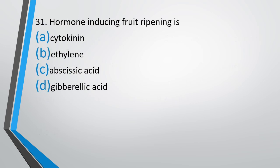Question number 31. Hormone inducing fruit ripening is cytokinin, ethylene, abscisic acid, or gibberellic acid. The correct answer is option B. Ethylene induces fruit ripening.